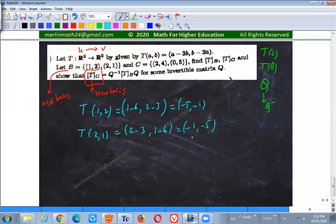Okay, so the matrix that transforms the basis, so we say TB would be those in a column, right? So I would get minus 5, minus 1, and then minus 1, minus 5.